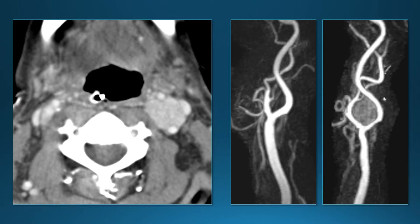Another patient has a mass between the internal carotid, external carotid, and jugular vein. On MR angiogram, the normal right side shows the carotid bifurcation clearly, while on the left we see an enhancing tumor right in the crotch of that carotid bifurcation. This is another paraganglioma — specifically a carotid body paraganglioma.